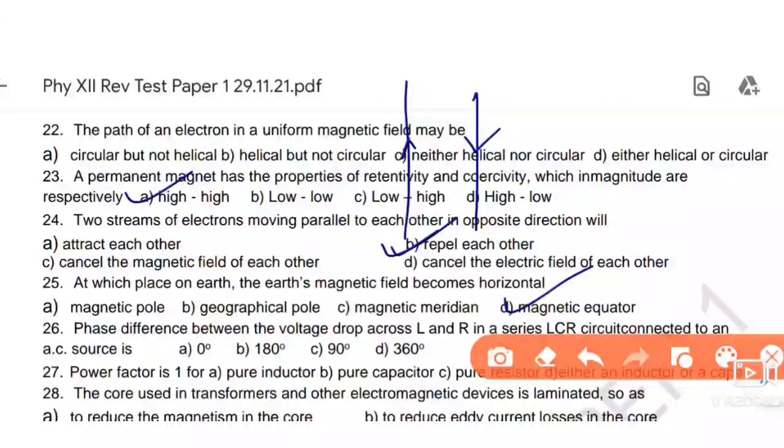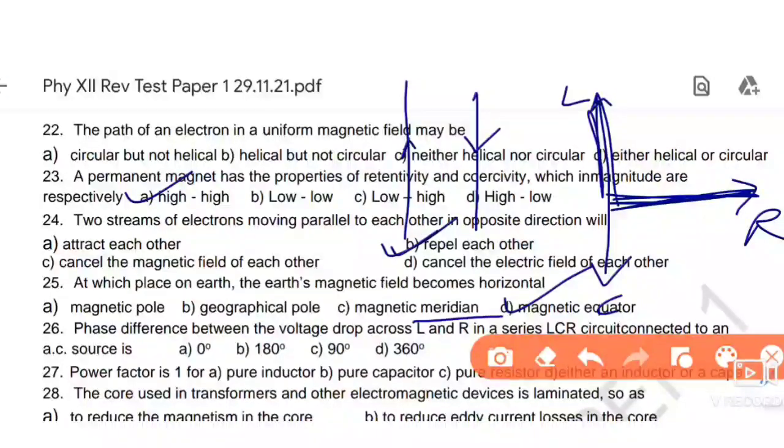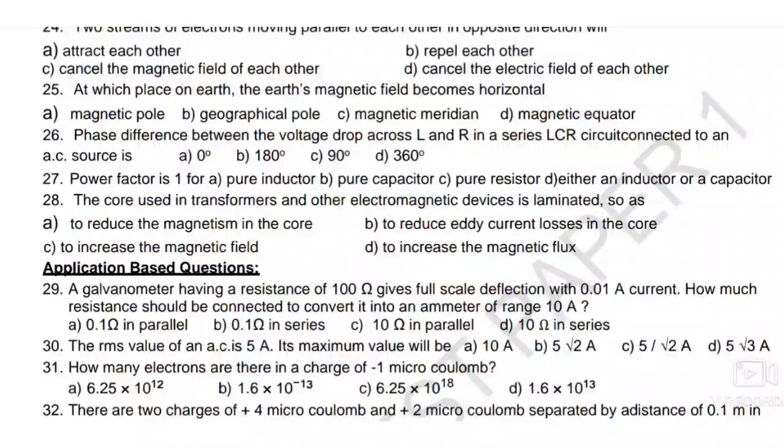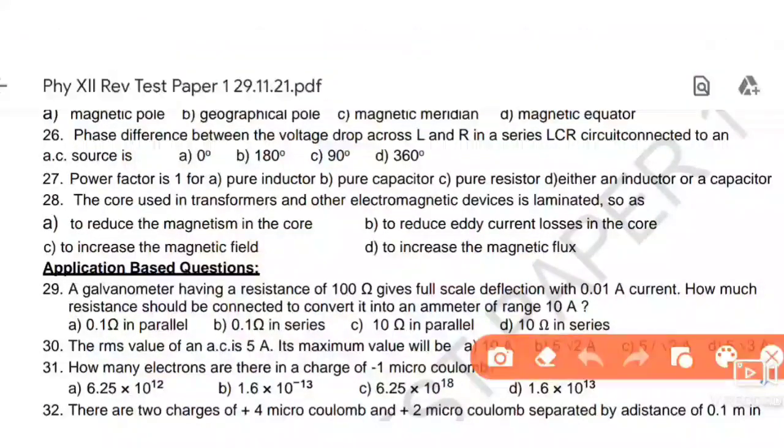For electromagnet, the material should be easily magnetized and easily demagnetized. So retentivity should be low and coercivity should be low. When we make electromagnet, low retentivity and low coercivity. Whereas for permanent magnet - like steel - once magnetized it remains magnet forever. So for permanent magnet, high retentivity and high coercivity. Next, phase difference between voltage drop across L and R in LCR series circuit. In LCR series circuit, phase difference between L and R is 90 degrees. Power factor 1 - power factor is for pure resistors.